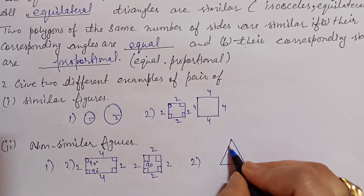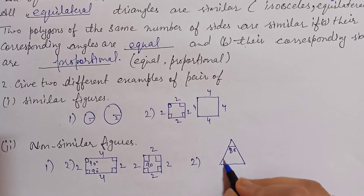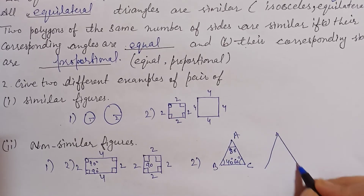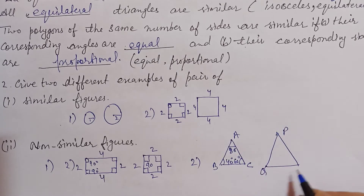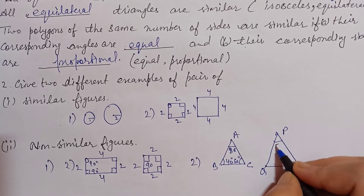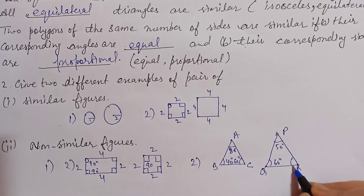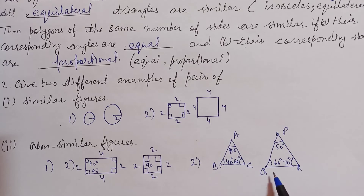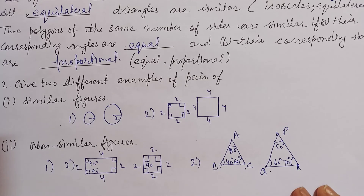Second example: two triangles. Triangle one has angles 80 degrees, 40 degrees, and 60 degrees. Triangle two, PQR, has angles 50 degrees, 60 degrees, and 70 degrees. You can see the corresponding angles are not equal, so this is a non-similar figure.